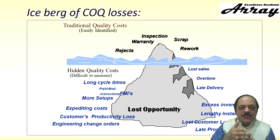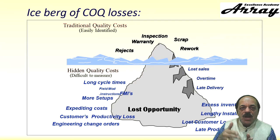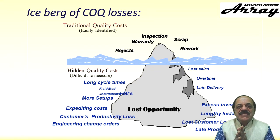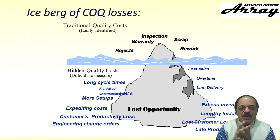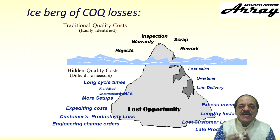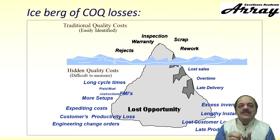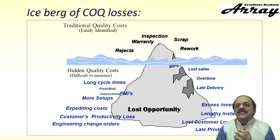Hidden quality costs — starting with long cycle time: the longer you take to manufacture because you haven't done enough analysis to remove non-value-added content, the less production you do, less sales, and less turnover. Longer cycle times also mean late delivery to customers and potential late delivery penalties. Next is FMI — Field Modification Instructions — where companies send instructions for field assembly and commissioning to fix issues that weren't resolved internally, resulting in huge money loss. More setups is another example: in a famous automobile industry case, setup time was reduced from one week to nine minutes and ultimately to one minute — this is the famous Single Minute Exchange of Dies (SMED), an inspiration for continuous improvement.